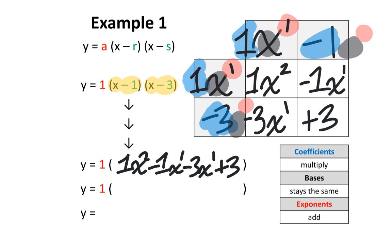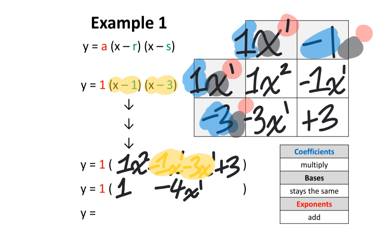At this point, we look for like terms. Remember, like terms have the same base and same exponent. The negative 1x and negative 3x terms are like terms. Combining them gives you negative 4x to the power of 1 — bases and exponents stay the same. The 1x squared and positive 3 each stay exactly the same.